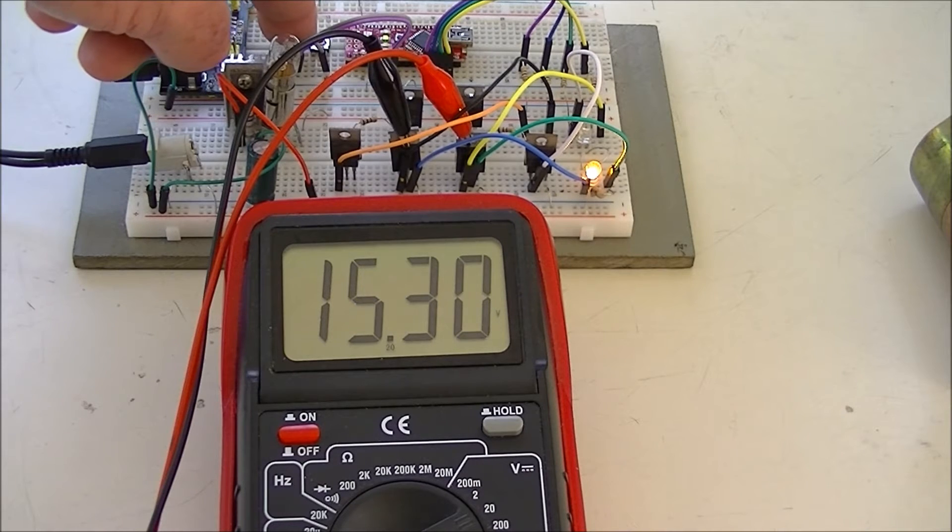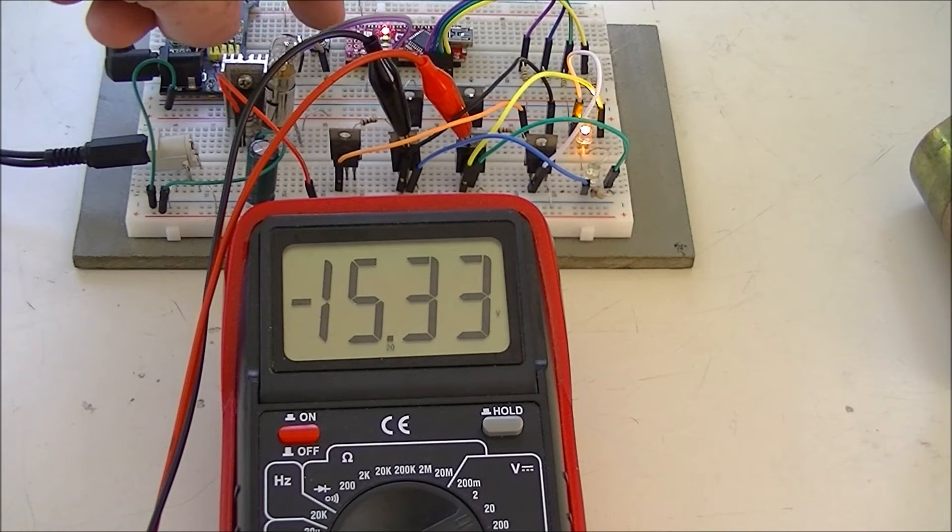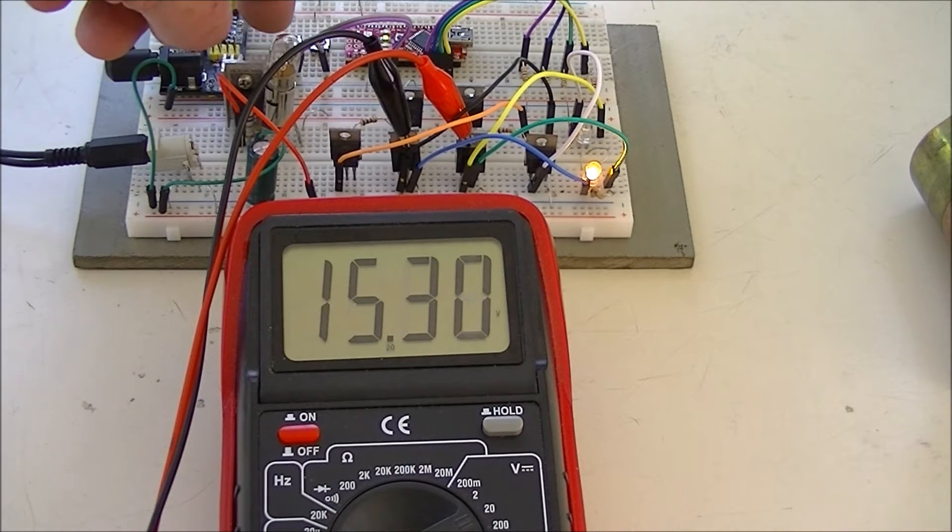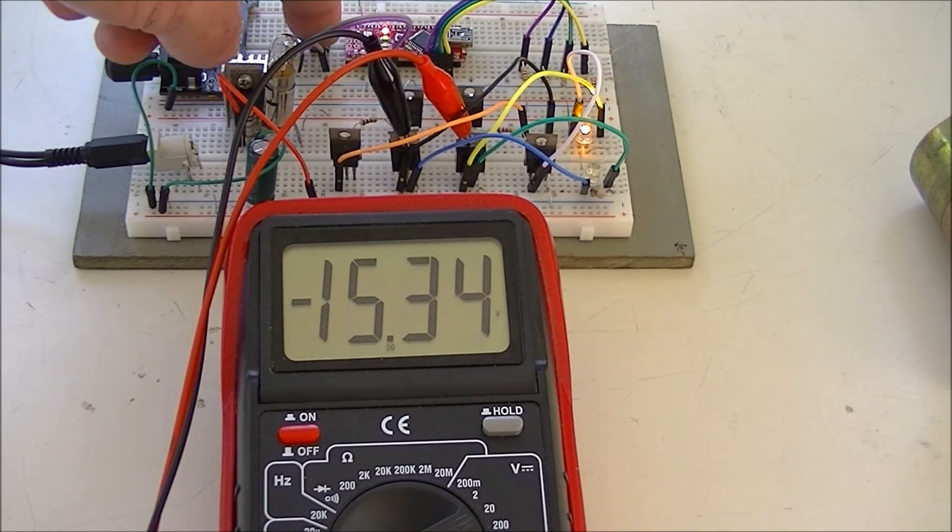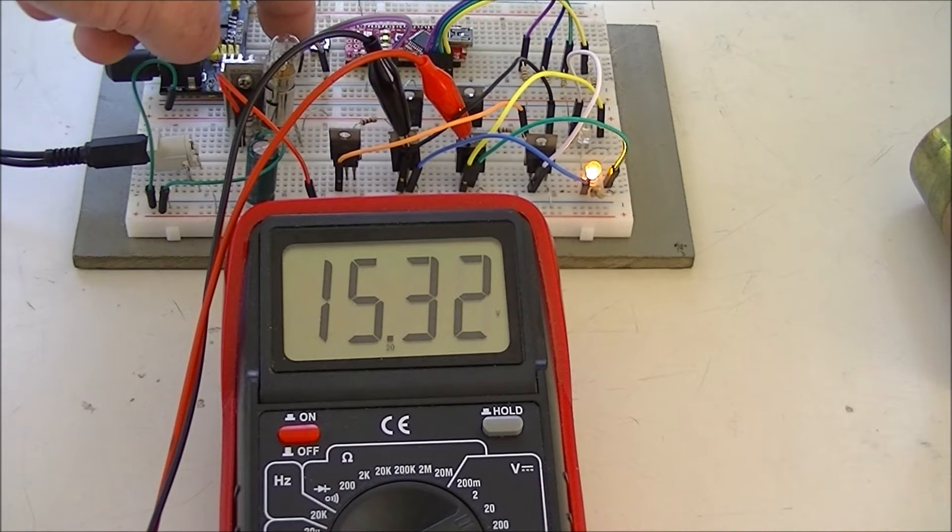Let's reverse the polarity. The other LED comes on. We got the negative polarity. This is what your H-bridge is supposed to do.